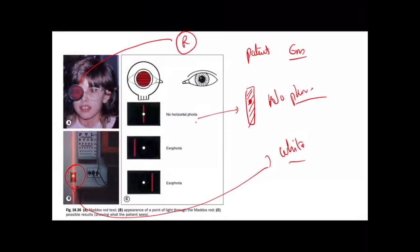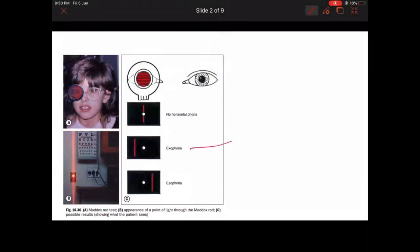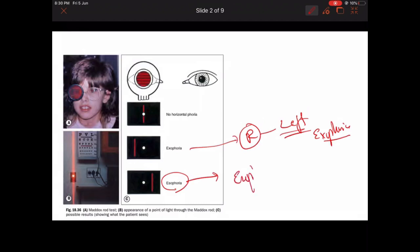Since the Maddox rod is on the right side: if the patient says the red streak of light is on the left side, that means they are having exophoria — crossed diplopia. If the patient sees the red streak of light on the right side, and the Maddox rod is on the right side, that means they are having esophoria. Either of these three conditions — orthophoria, exophoria, or esophoria — can be present, and this is how we test using the Maddox rod.